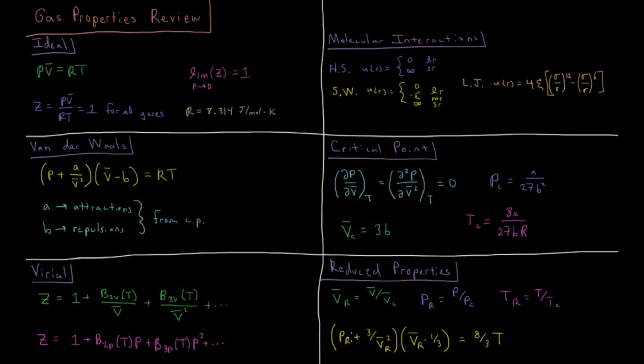Then we can substitute and solve the van der Waals equation of state in terms of reduced properties. Reduced pressure plus 3 over reduced volume squared, times reduced molar volume minus 1 third, equals 8 thirds times our reduced temperature.